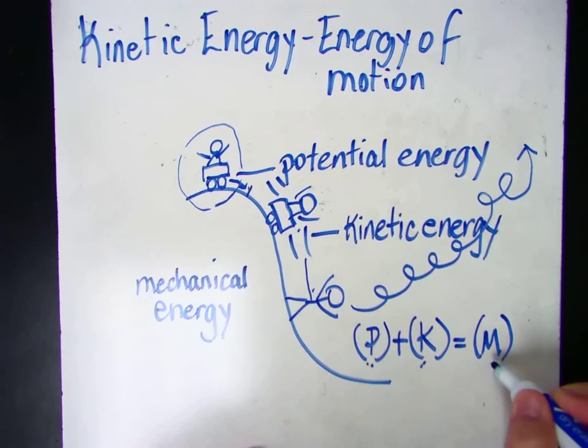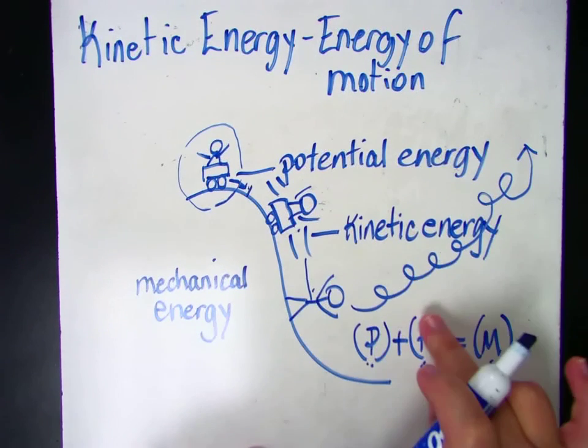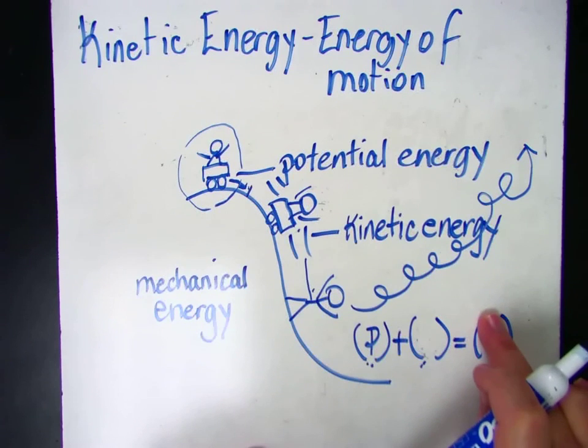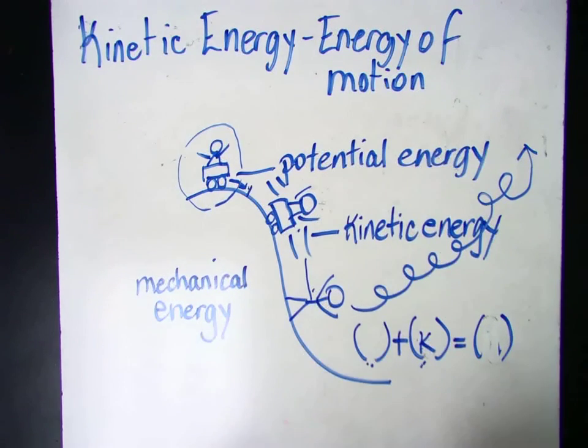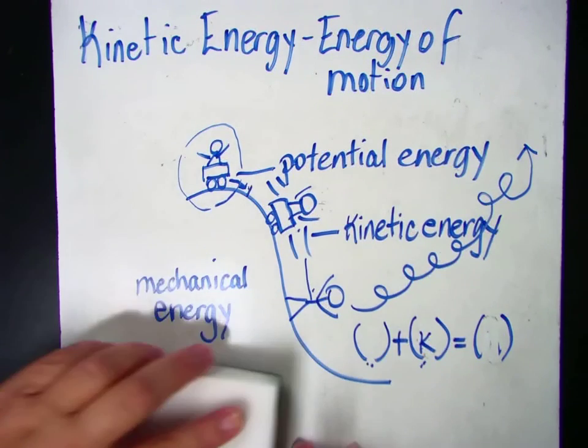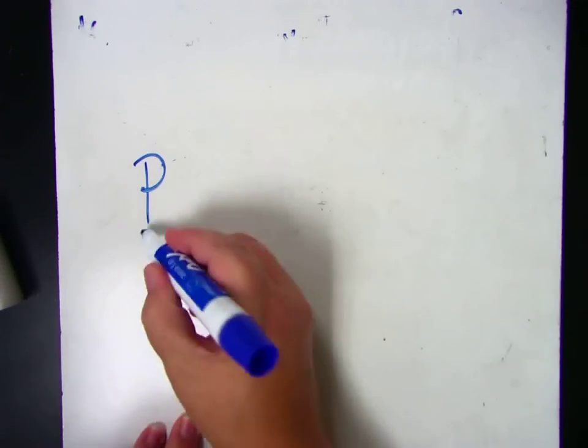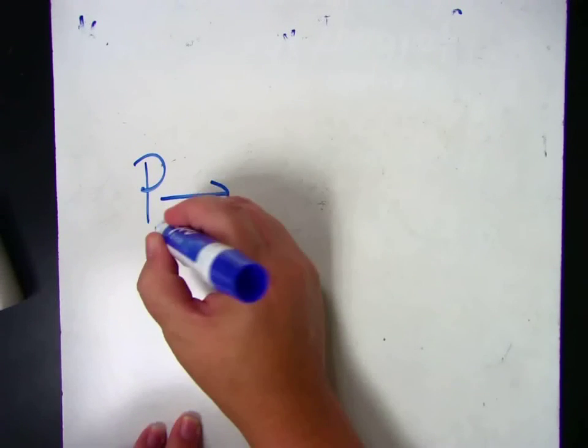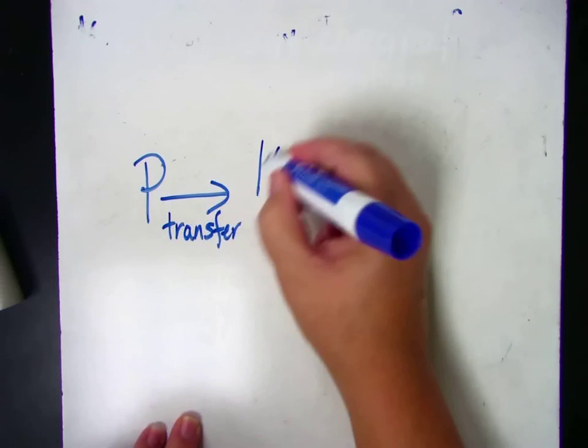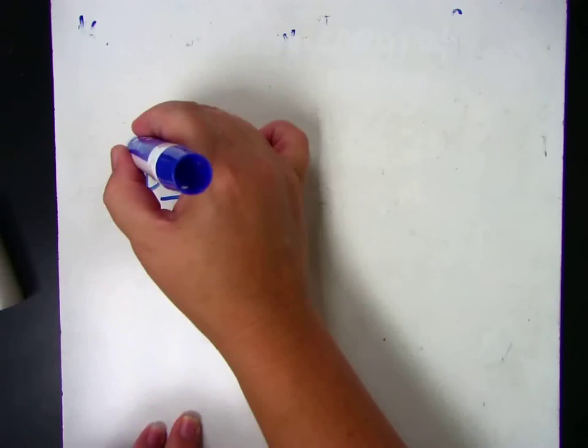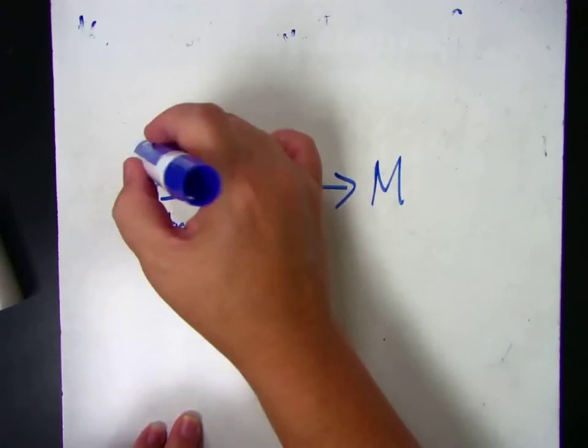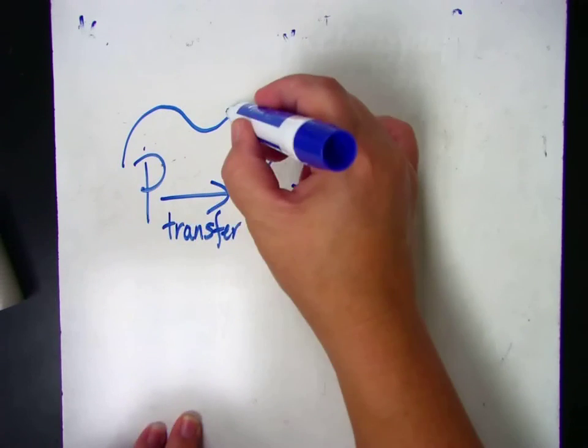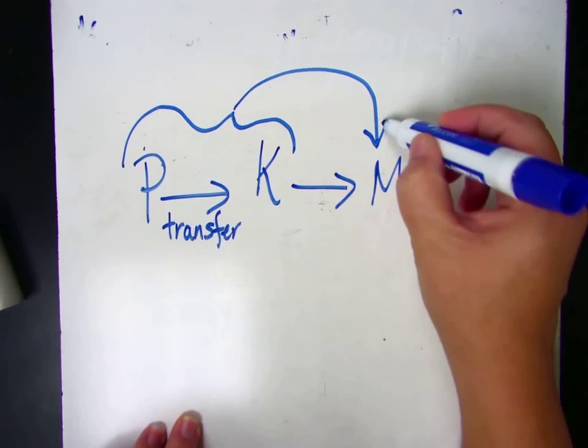If we take away kinetic, we cannot have mechanical. If we take away potential, we cannot have mechanical. So just to review, PKM is potential, kinetic, and mechanical. The potential energy or get ready energy gets transferred to kinetic energy. In order to have our final type of energy, the mechanical energy, the one that allows us to move things, we need to have these two. So these two are necessary in order to have this one.